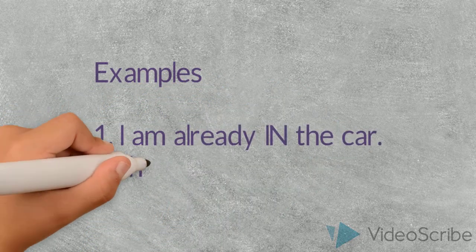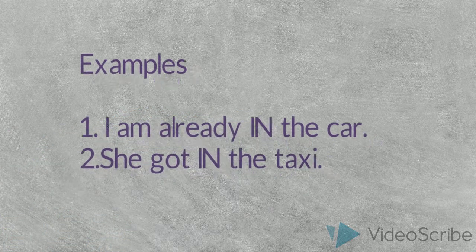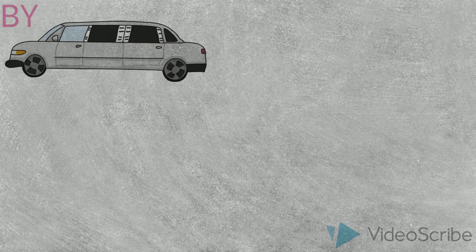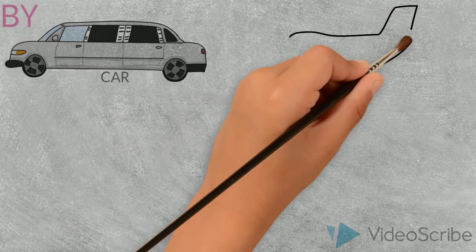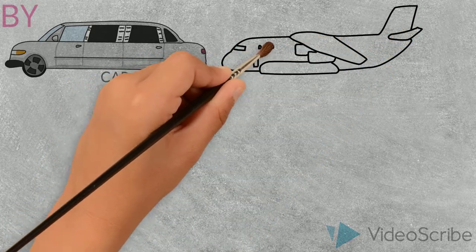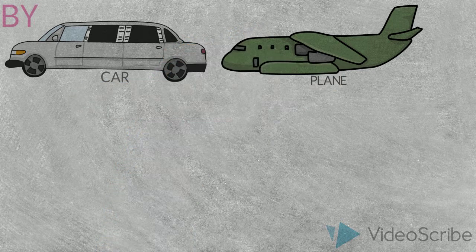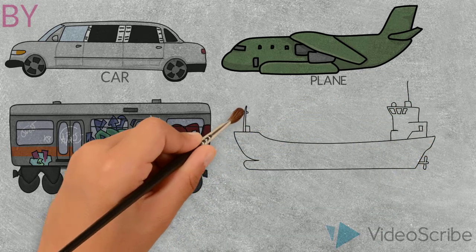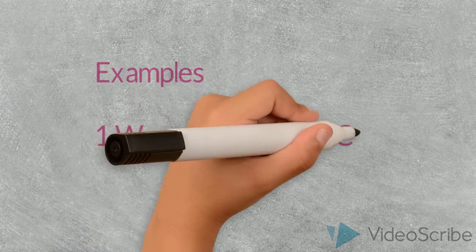For examples: 'I am already in the car.' 'She got in the taxi.' Now for 'by' — when someone asks how did you get here, you say: by car, by plane, by train, or by boat. So 'by' is used to indicate the means of travel. For example: 'We can travel by car.' 'Tom can travel by plane.' Note: 'at' has no use in transportation.